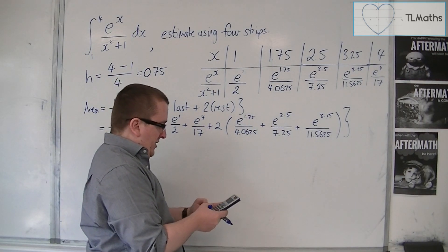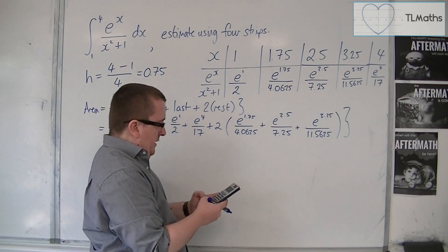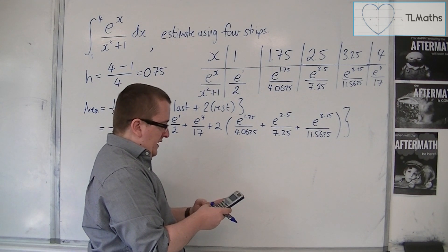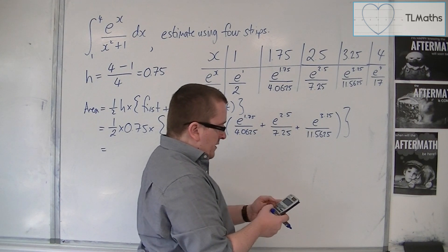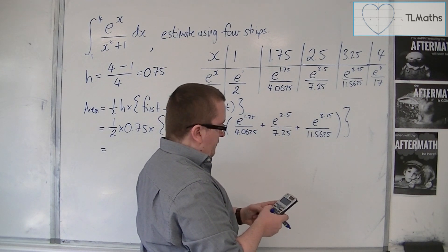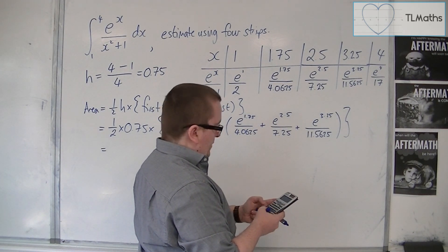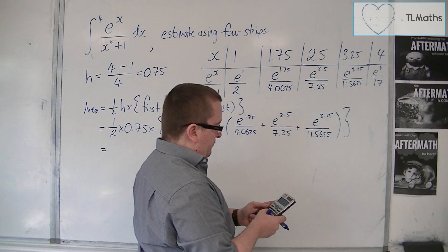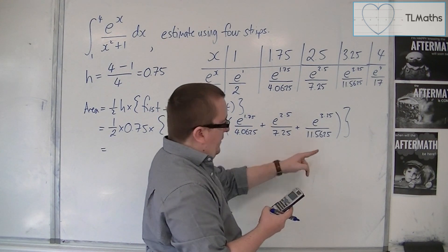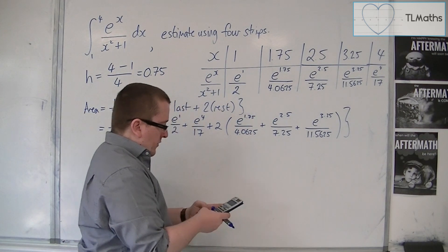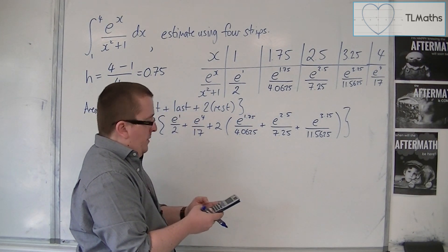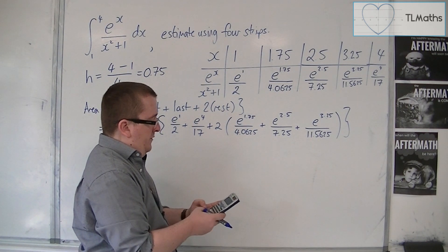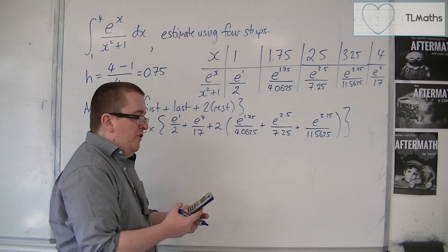So then I need to evaluate this. So let's start with e to the 1.75 divided by 4.0625, plus this one, so e to the 2.5 divided by 7.25, plus this one, e to the 3.25, rather, divided by 11.5625. So for that, I've got 5.327.